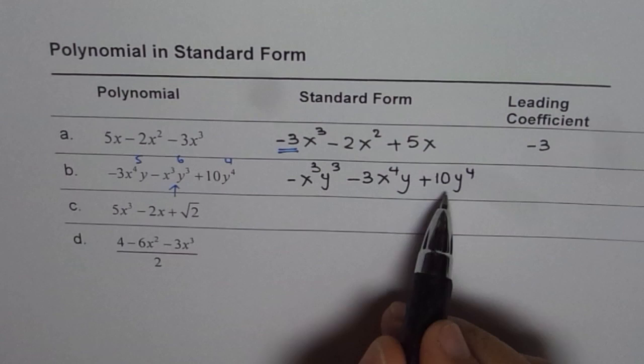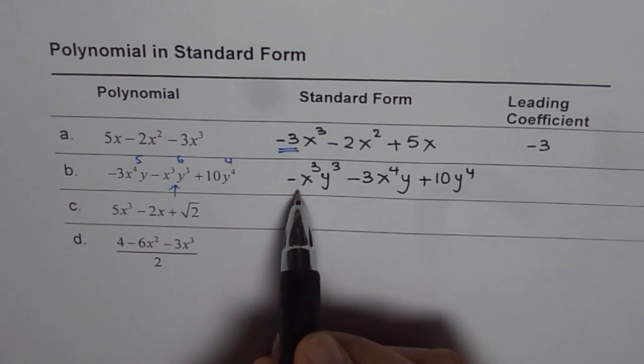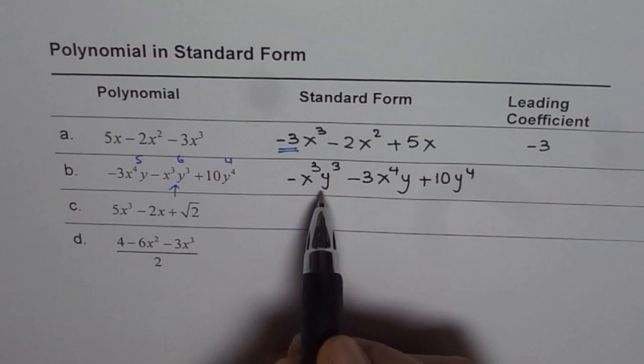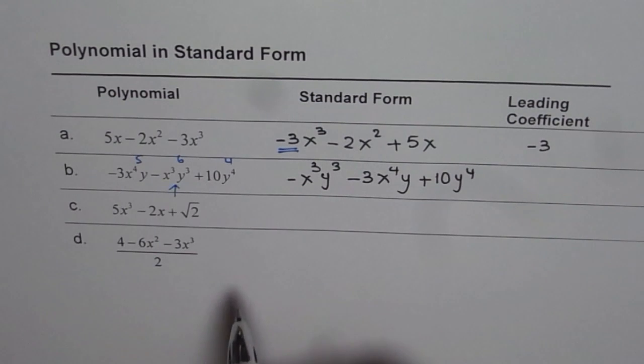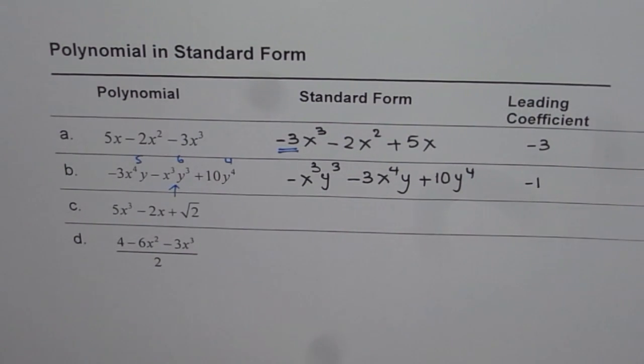Whenever you write your polynomial in standard form, leading coefficient is the number associated with the variables of the first term, the leading term. Here it is minus 1. So minus 1 is the leading coefficient.